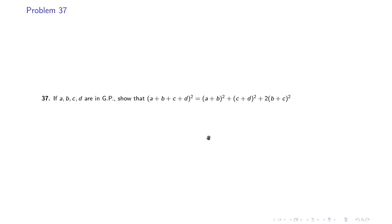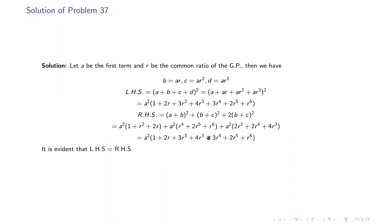Problem 37: if A, B, C, D are in GP, show that (A+B+C+D)² = (A+B)² + (C+D)² + 2(B+C)². We let A be the first term and R the common ratio. The left-hand side expands as A²(1 + 2R + 3R² + 4R³ + 3R⁴ + 2R⁵ + R⁶). Substituting on the right-hand side and arranging the terms confirms LHS = RHS.